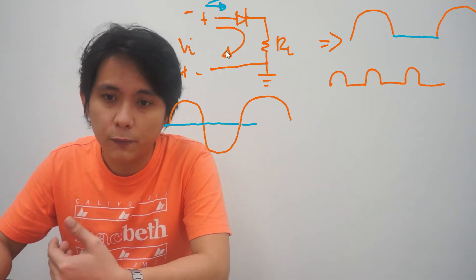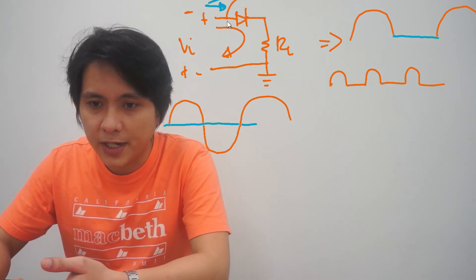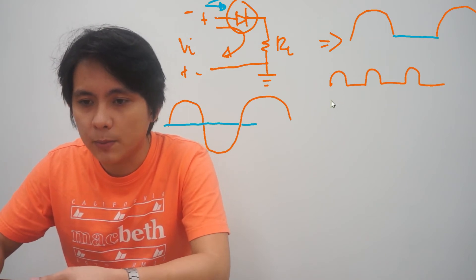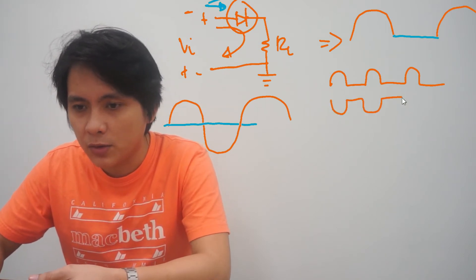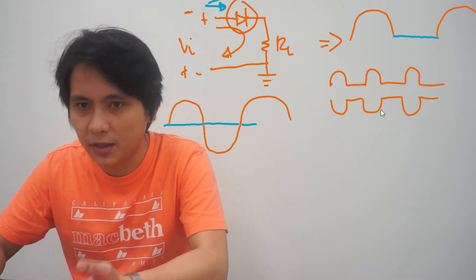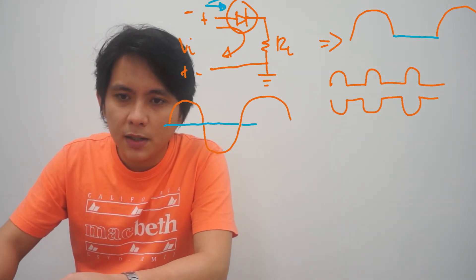If we reverse the polarity of this particular diode here, then the output wave will become something like this, on the negative cycle. It conducts during the negative cycle.